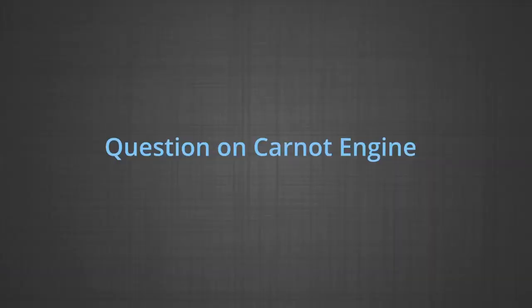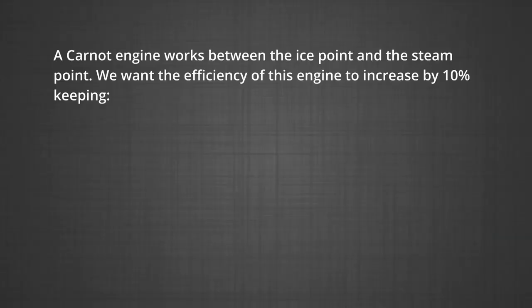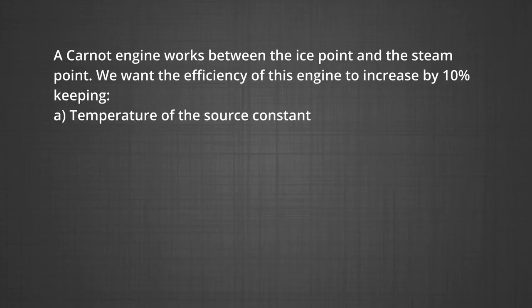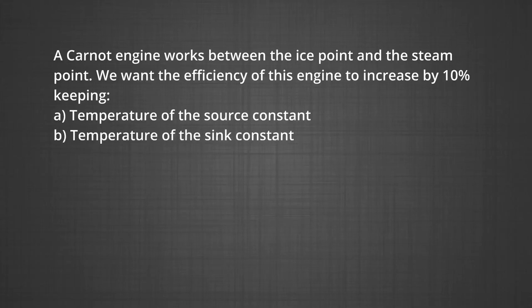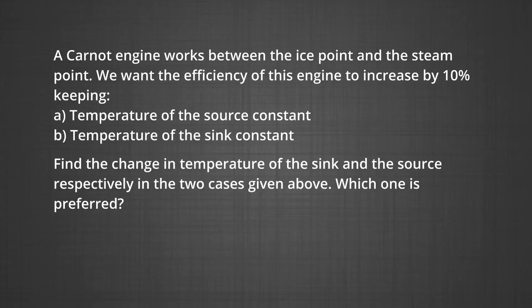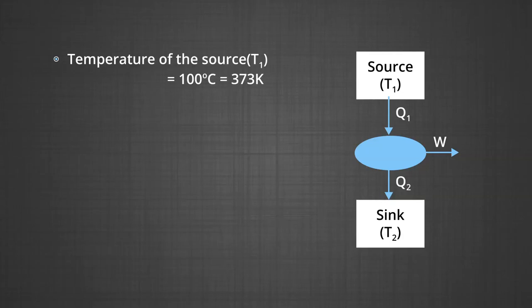The next question is based on a Carnot engine. A Carnot engine works between the ice point and the steam point. We want the efficiency to increase by 10%, first keeping the source temperature constant, then keeping the sink temperature constant. Find the change in temperature of the sink and source respectively, and determine which case is preferred. The temperature of the source T₁ = 100°C = 373 K and the sink T₂ = 0°C = 273 K.